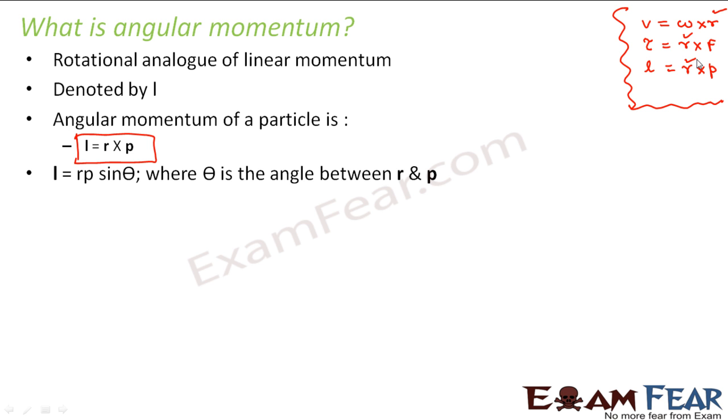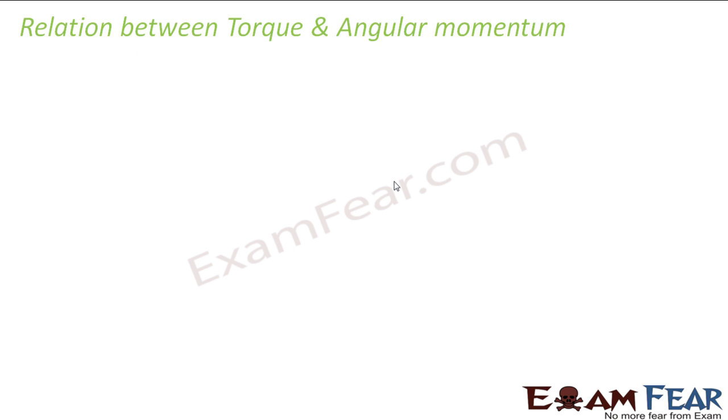Right? So now in this case, the magnitude of angular momentum will be given by Rp sin theta, where theta is the angle between the position vector and the linear momentum.